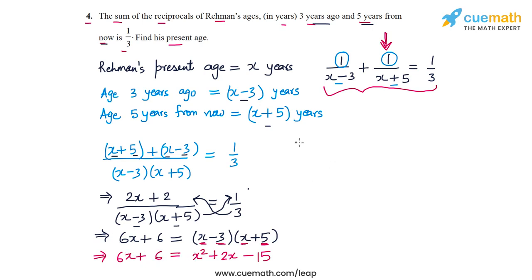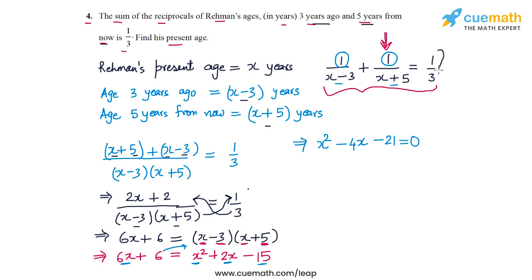Now let's combine all the terms. We get x², and taking 6x to the right gives minus 4x, and taking 6 to the right gives minus 21. So we arrive at the quadratic equation: x² - 4x - 21 = 0.